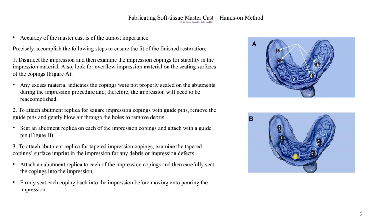Fabricating the master cast. Depending on the type of restoration or prosthesis, for fixed prosthesis we like to use a soft tissue material. The soft tissue material is a silicone-based material, and the purpose is to be able to remove the soft tissue from the master cast to see the fit of the abutment and the prosthesis during the fabrication process.